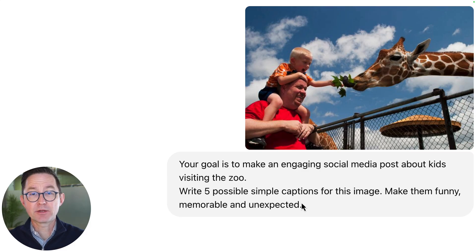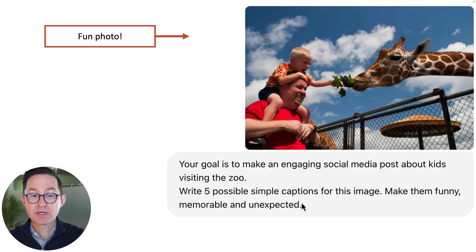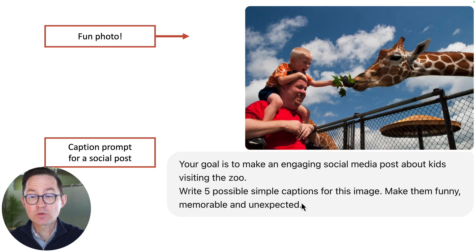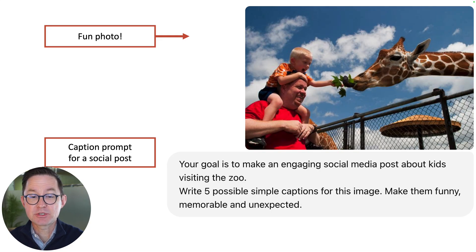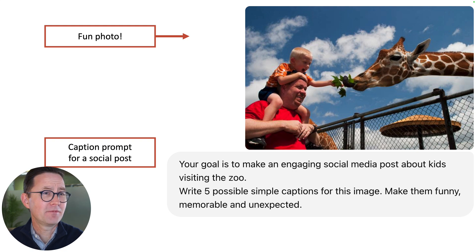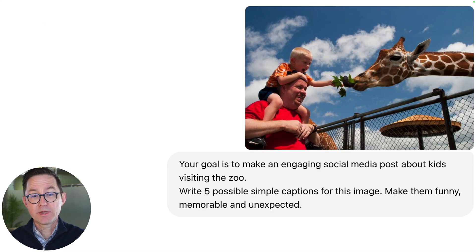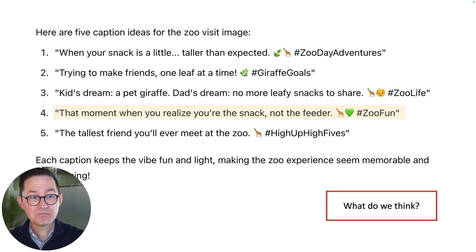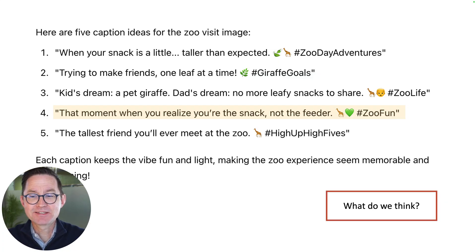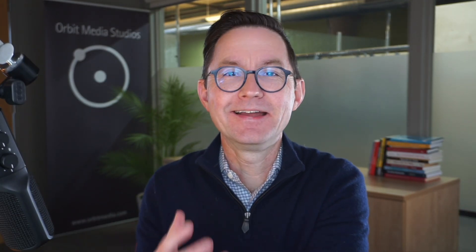I'm going to use ChatGPT — you can use whatever model you like. I'm going to put in this short, simple prompt. There's the picture, there's the prompt: 'Your goal is to make an engaging social media post about kids visiting the zoo. Write five possible simple captions for this image. Make them funny, make them memorable, make them unexpected.' Add whatever words to that prompt that are aligned with your social strategy, your tone advice, your brand. It comes back — not too bad. 'That moment when you realize you're the snack, not the feeder.' It's better than the blank page.